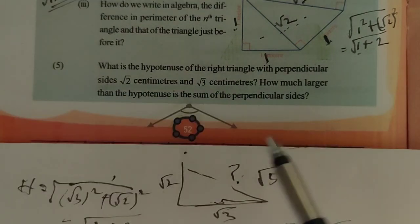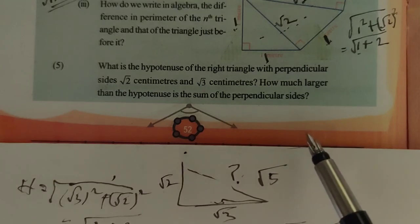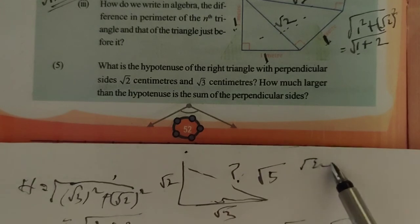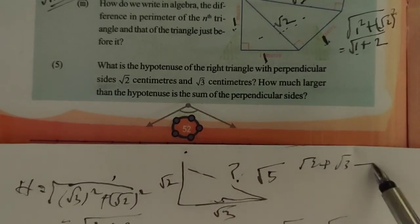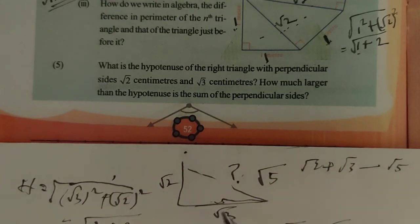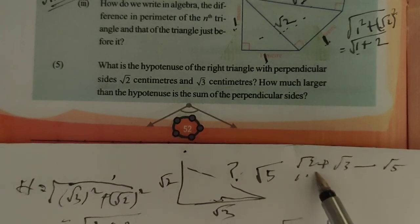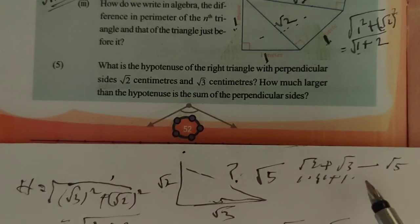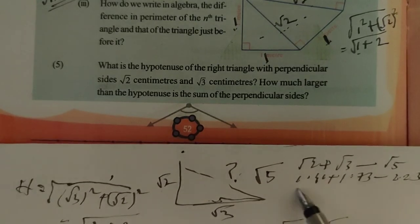How much larger than the hypotenuse is the sum of the perpendicular sides? The sum of perpendicular sides is root 2 plus root 3. The hypotenuse is root 5. The difference is root 2 plus root 3 minus root 5. Root 2 is 1.41, root 3 is 1.73, root 5 is 2.23. So 1.41 plus 1.73 minus 2.23 gives 0.91. The difference is 0.91 cm.